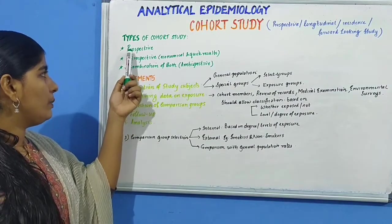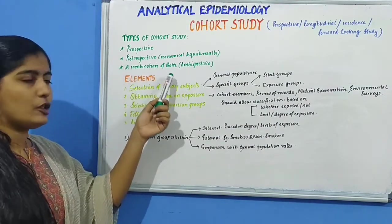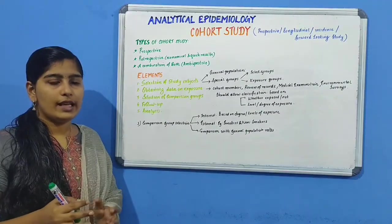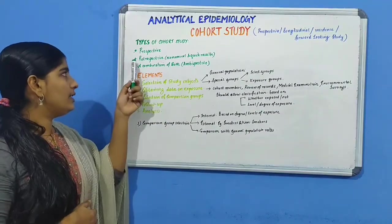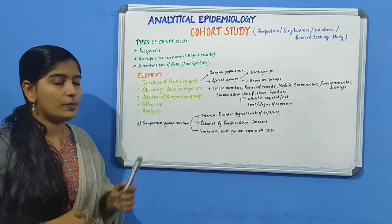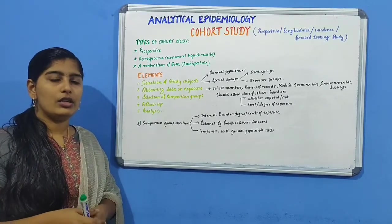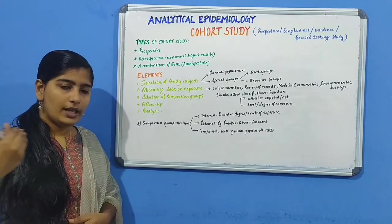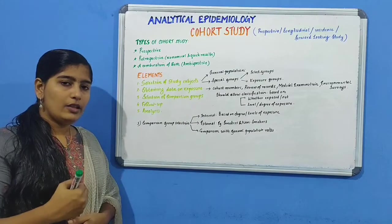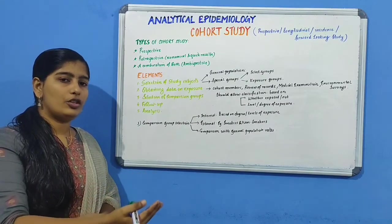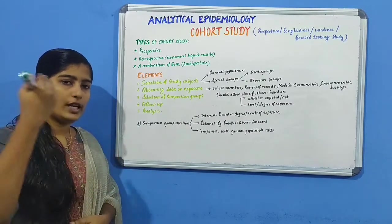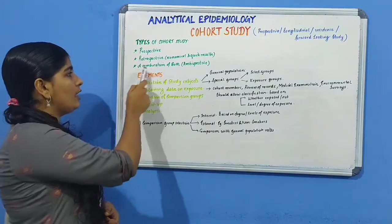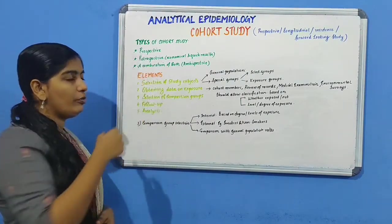Moving on to a combination of both prospective and retrospective study, it is also referred to as ambispective study. It has elements of both studies — both prospective and retrospective components. The cohort is identified from past records, then we start the study from the past till the present and also look for the outcome in the future through follow-up. So it goes from past to present to future.